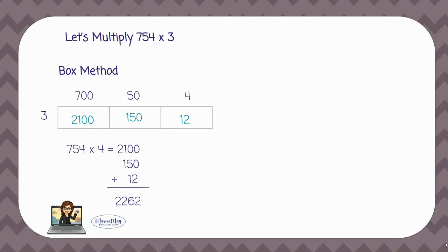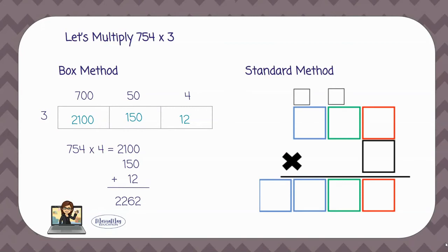It's called the standard method and for this one is where we stack the numbers. So I want to look at that row that has the blue, green, and red in it. That's where I'm going to put 754. Then I'm going to put the 3 in the black box. And now I'm going to multiply.